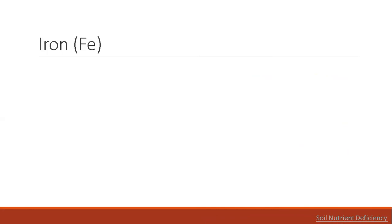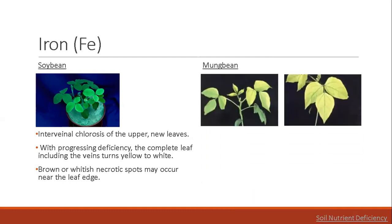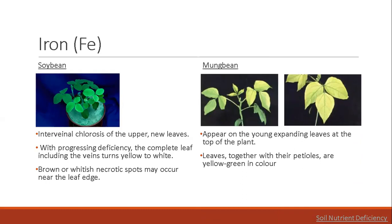Next is iron. Iron plays a critical role in various metabolic processes during plant growth and development. It is not mobile within the plant. A side effect of iron deficiency can be nitrogen deficiency, since iron is necessary for nodule formation. Iron deficiency in soybean can be observed as interveinal chlorosis of the upper new leaves; complete leaves including veins turn yellow to white, and brown or whitish necrotic spots may occur near the leaf edge. In mung bean, it appears on the young expanding leaves at the top of the plant, where leaves and petioles are yellow-green in color.